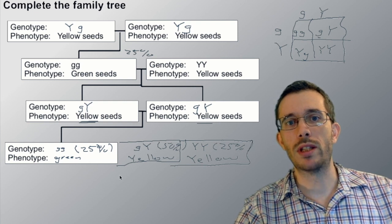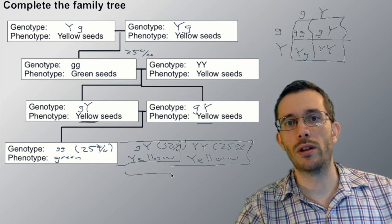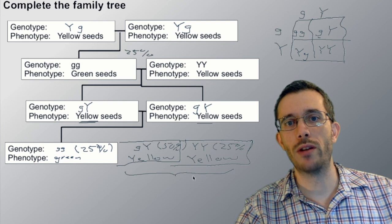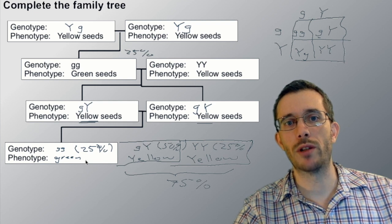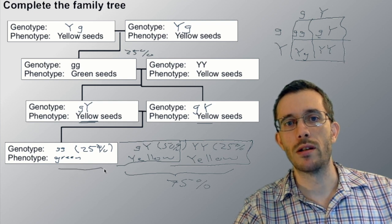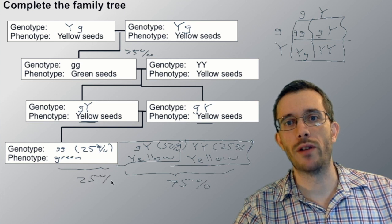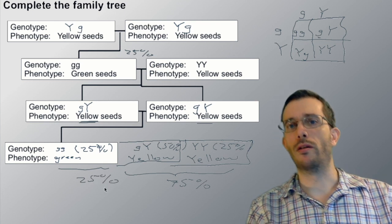Now interestingly, overall if we just look at the phenotype, the phenotype yellow will appear in 75 percent of all cases, while the one of the recessive one in this case will only appear in 25 percent of the cases.